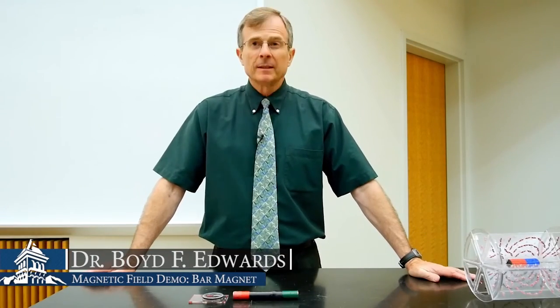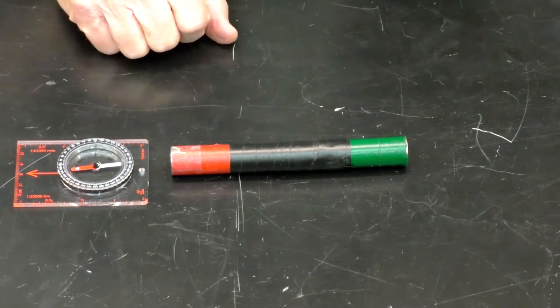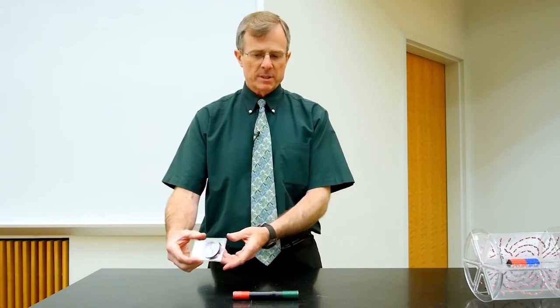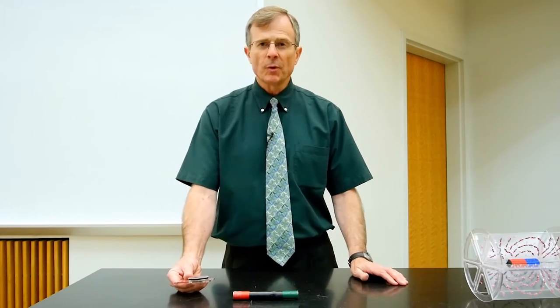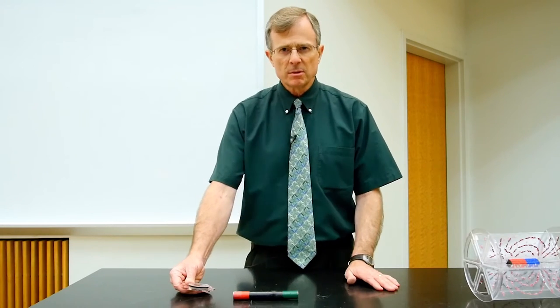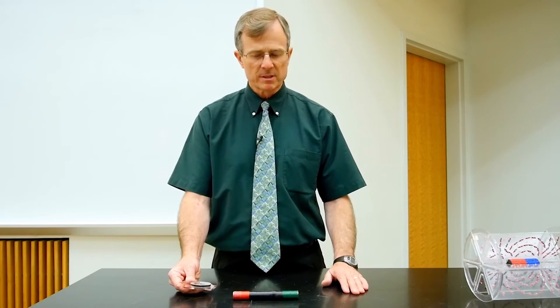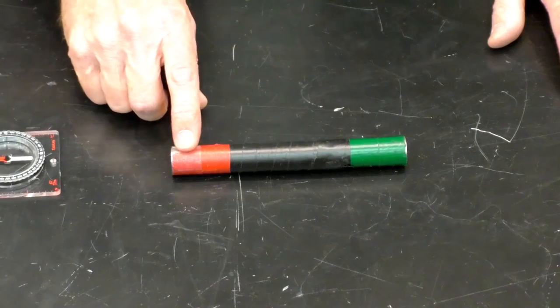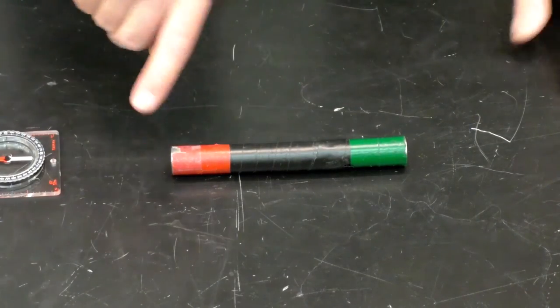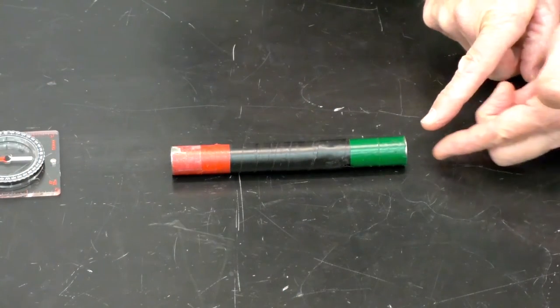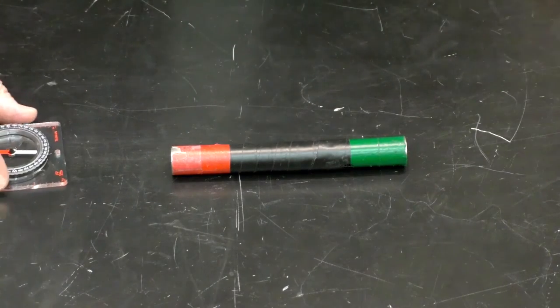I've got a bar magnet on the table. Its north pole is denoted red, south pole green. I've also got a compass. A compass is useful for finding the direction of the Earth's magnetic field, but you can also use it to determine which pole is the north pole or the south pole. The magnetic field lines emanate from the north pole — they come out of the north pole, come around the magnet, and then into the south pole. I can demonstrate that using this compass.